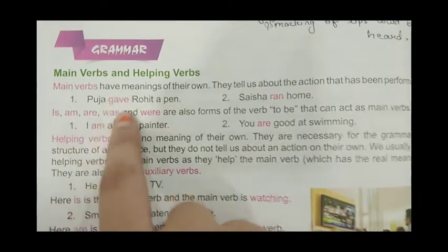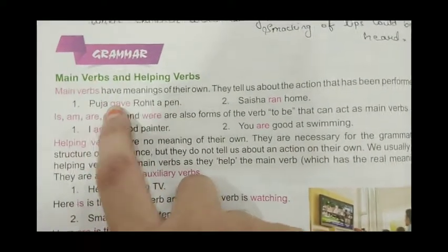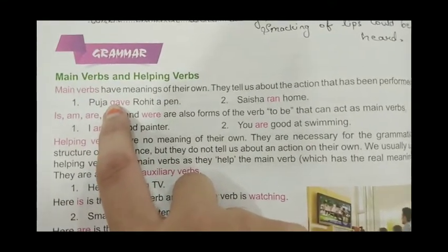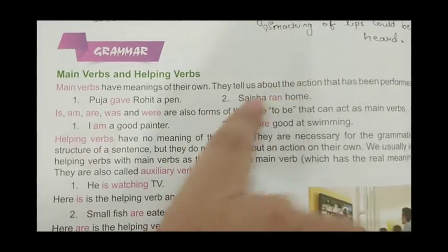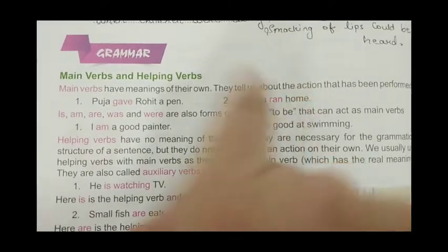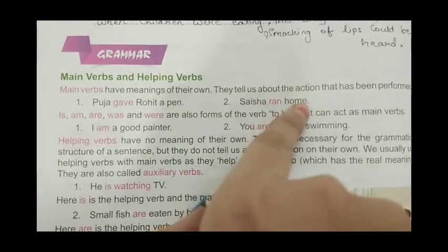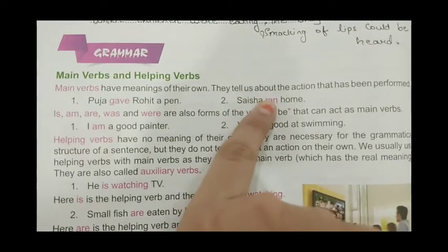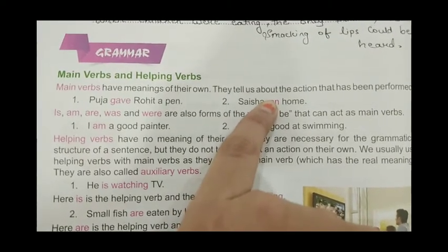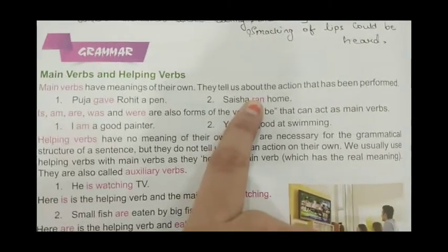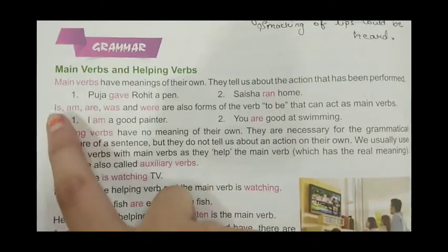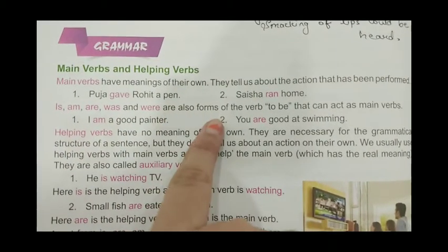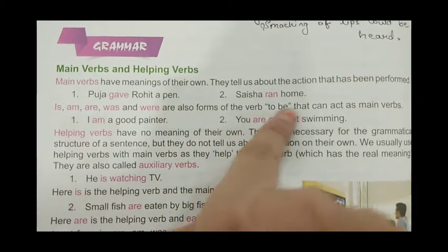For example: 'Puja gave Rohit a pen' — Puja ne kya kiya, diya pen, kisko Rohit ko. 'Saisha ran home' — Saisha bhaagti hui ghar gayi. So here we know about the action from the main verb. Is, am, are, was, and were are also forms of the verb 'to be' that can act as main verbs.